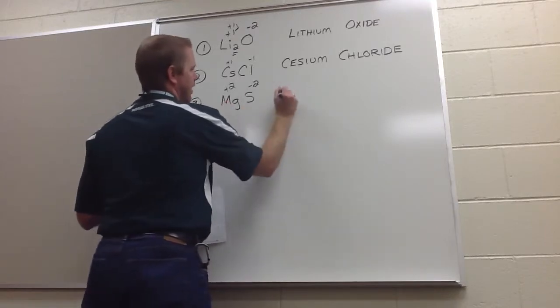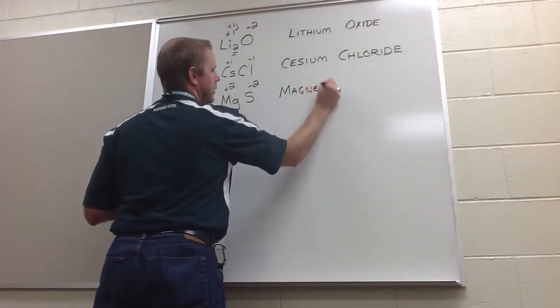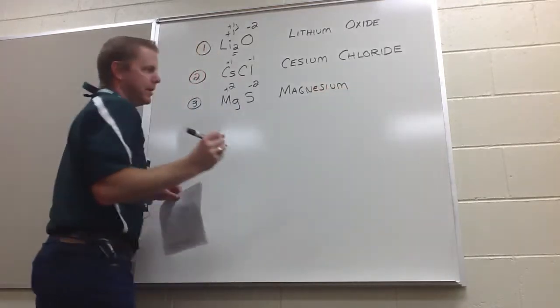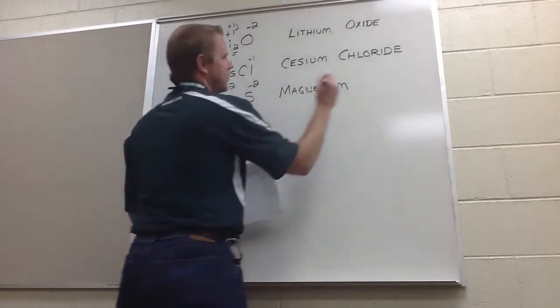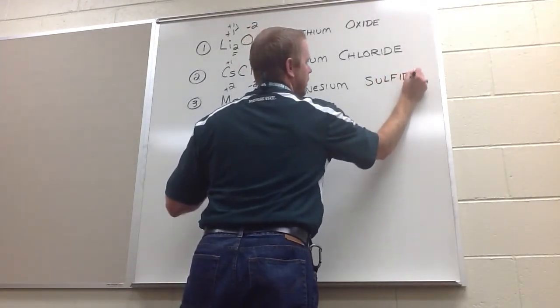Now, this element is magnesium. It is not a transition metal. Therefore, it doesn't need any type of other nomenclature system. S is sulfur, which becomes sulfide.